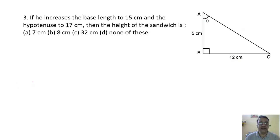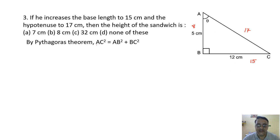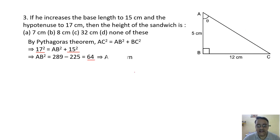Question 3: If base = 15 cm and hypotenuse = 17 cm, find the height. The Pythagorean triplet for 15 and 17 is 8. Using Pythagoras: AB² = 17² − 15² = 289 − 225 = 64, so AB = 8 cm. The correct option is option B.